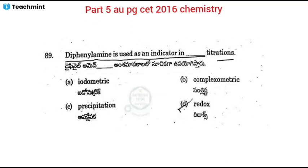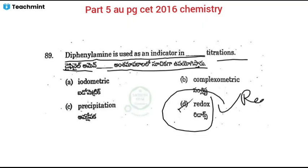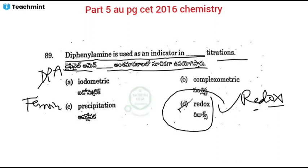Next topic covers indicators used in titrations. Redox indicators include DPA (diphenylamine), ferroin, and N-phenyl anthranilic acid. KMnO₄ acts as a self-indicator. Potassium ferricyanide is also used as a redox indicator. Starch is used as an indicator in iodometric titrations.